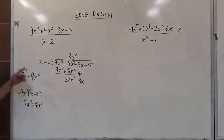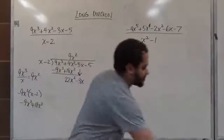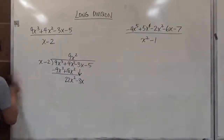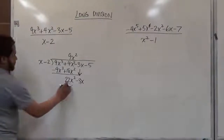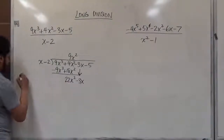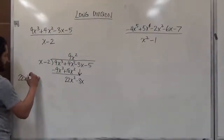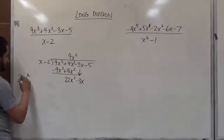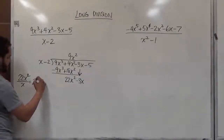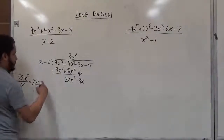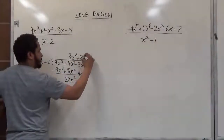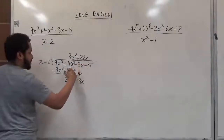We start over with the same routine — the rinse, wash, repeat method. We take the leading term 22x squared, divide by x, and get the quotient 22x. That goes up top as positive 22x, right above the x term — they should always line up.